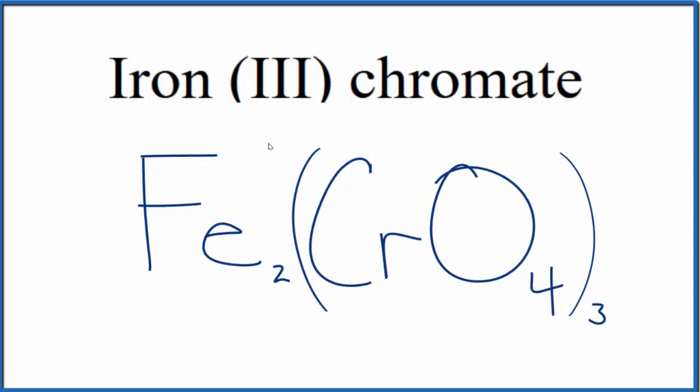That makes the formula for iron III chromate: Fe2(CrO4)3.